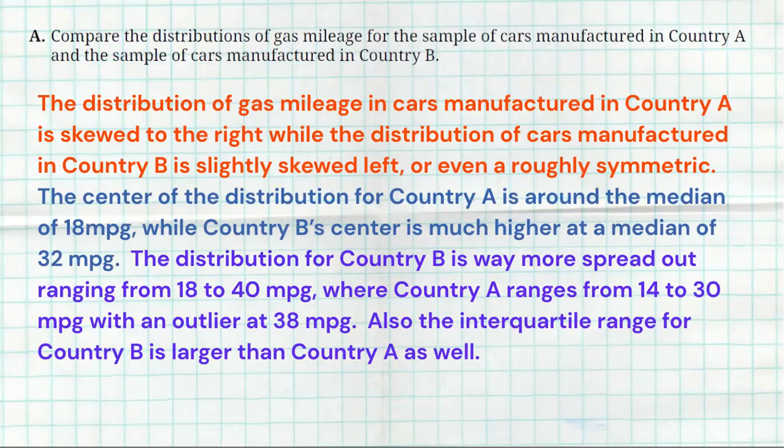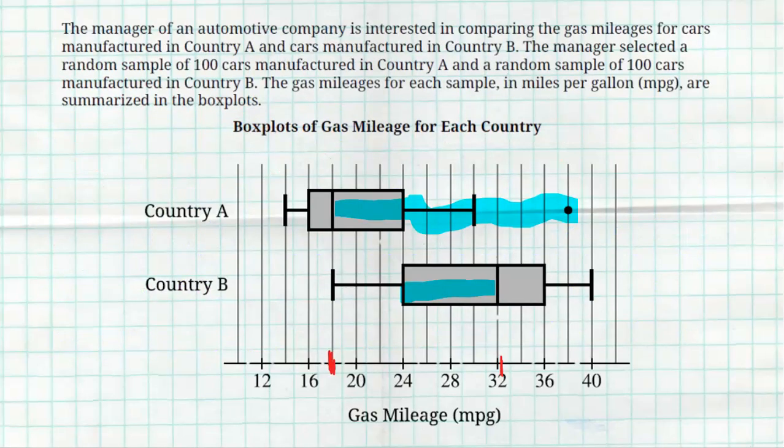And then finally, we're going to talk about the spread. I said the distribution for Country B is way more spread out, ranging from 18 to 40, while Country A ranges from 14 to 30, with that outlier at 38. So yes, that outlier does technically count in the range, but if you just kind of look at the whiskers, Country B is way more spread out than Country A. With the outlier, I understand that they don't look as spread out, so you can maybe say that they have a roughly equal spread.